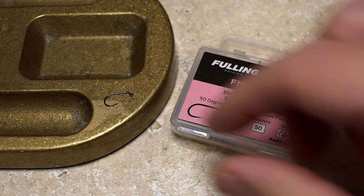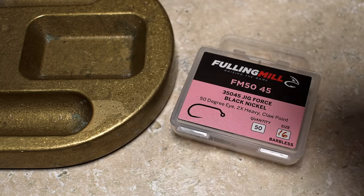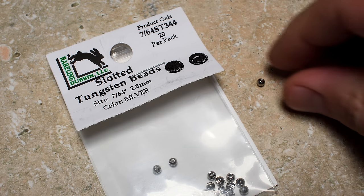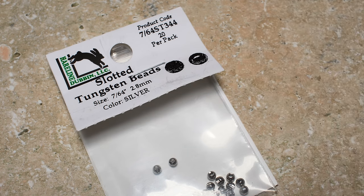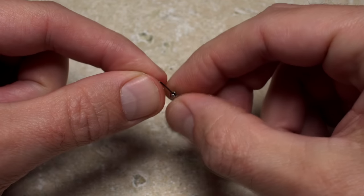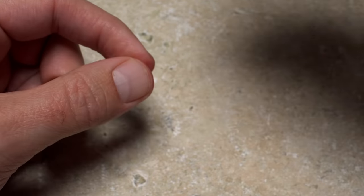Dave starts with a Folling Mill size 16 barbless jig hook. To this he's going to add a 7 64ths of an inch silver colored slotted tungsten bead. He feeds the hook point into the small hole of the bead, and then slides the bead around to behind the hook eye.